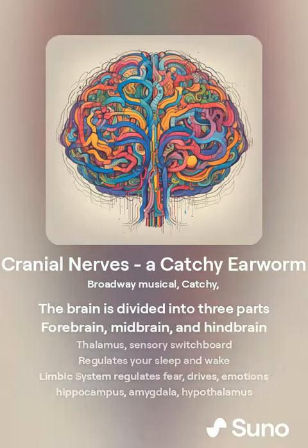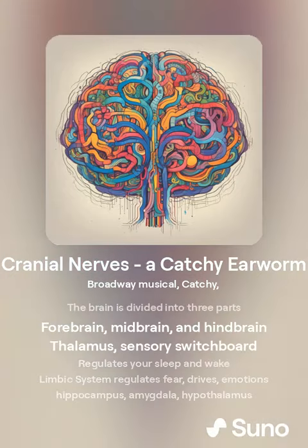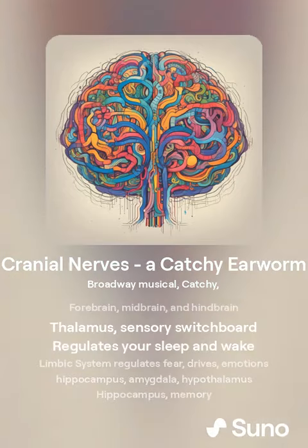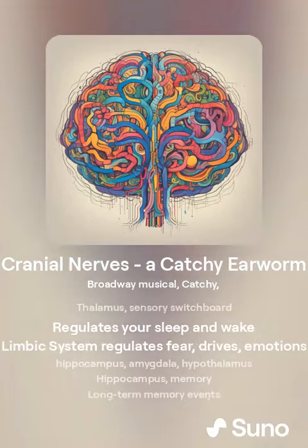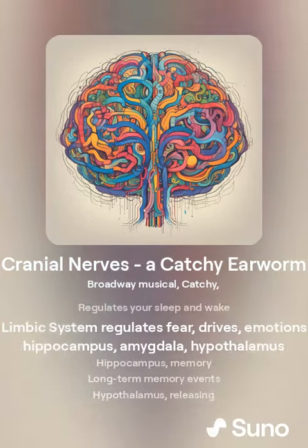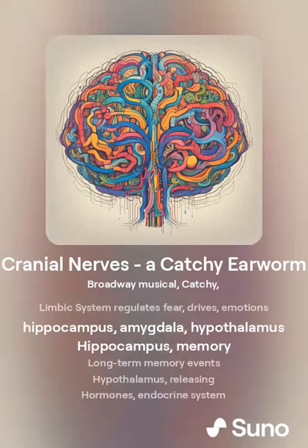The brain is divided into three parts: forebrain, midbrain, and hindbrain. The thalamus acts as a sensory switchboard and regulates your sleep and wake cycles. The limbic system regulates fear and drives emotions.